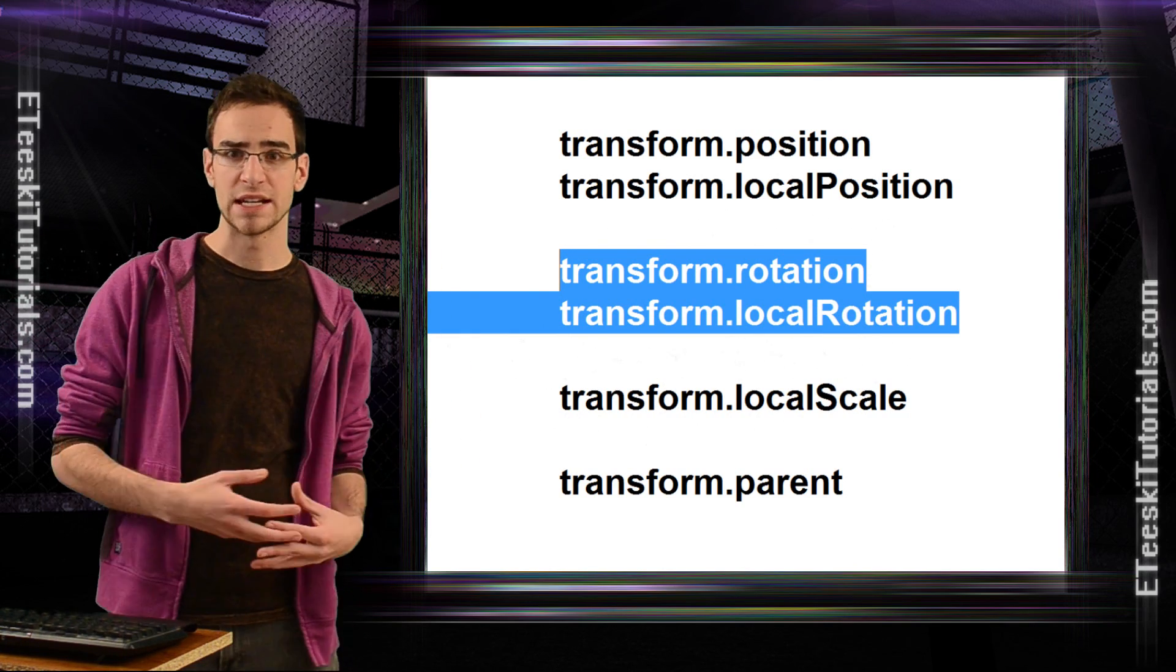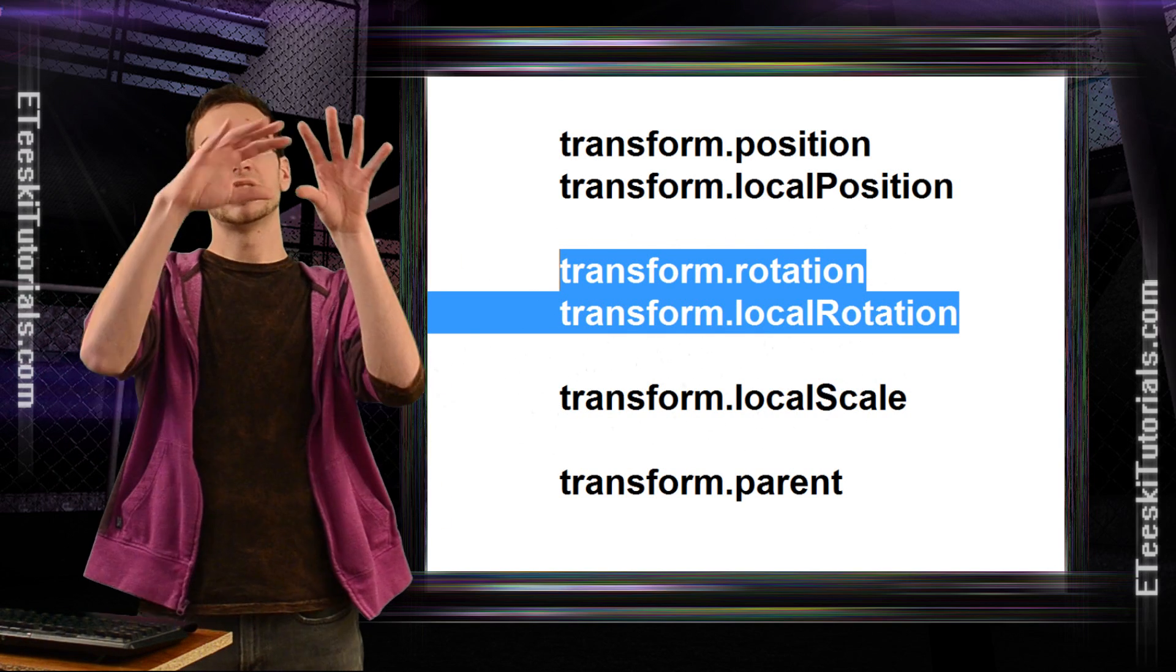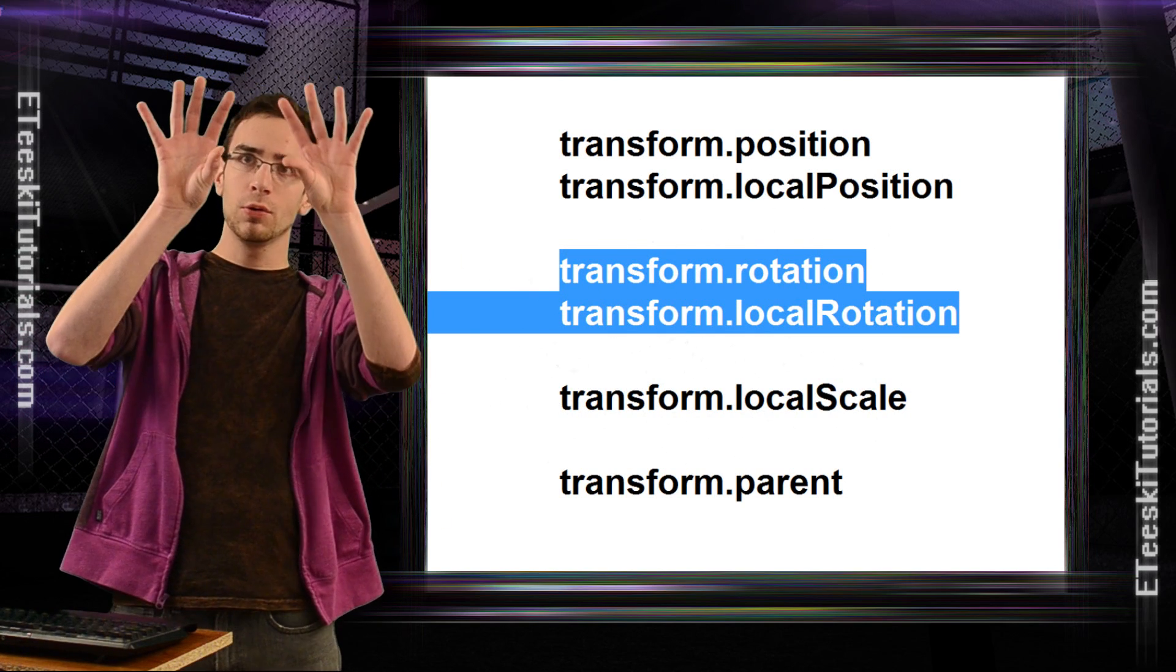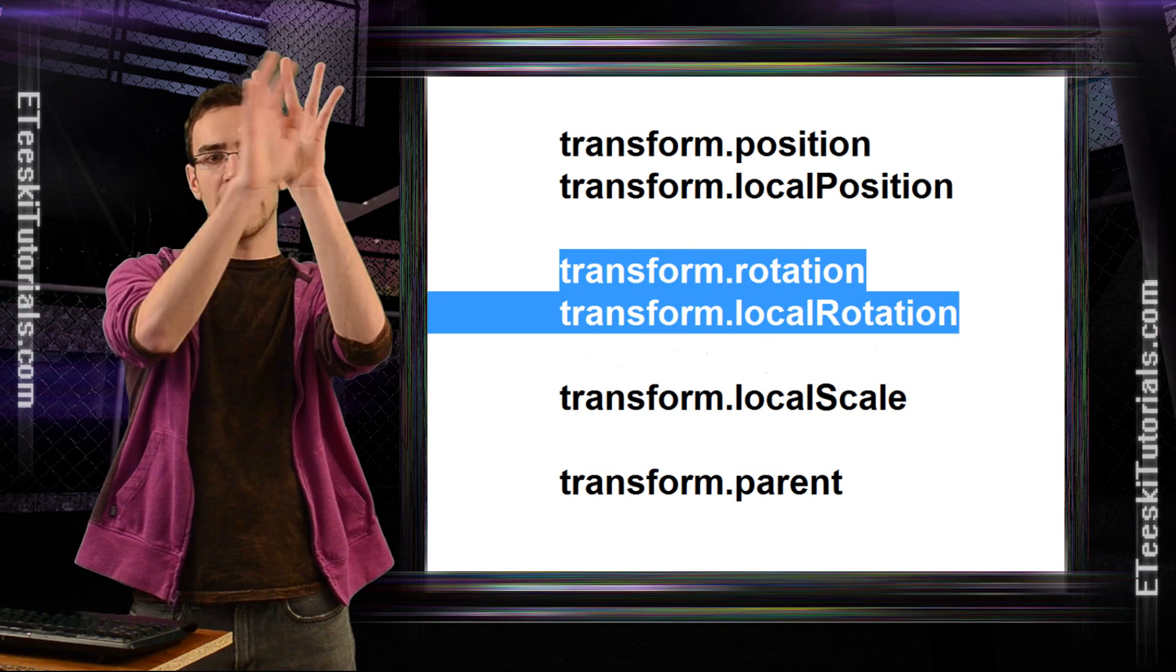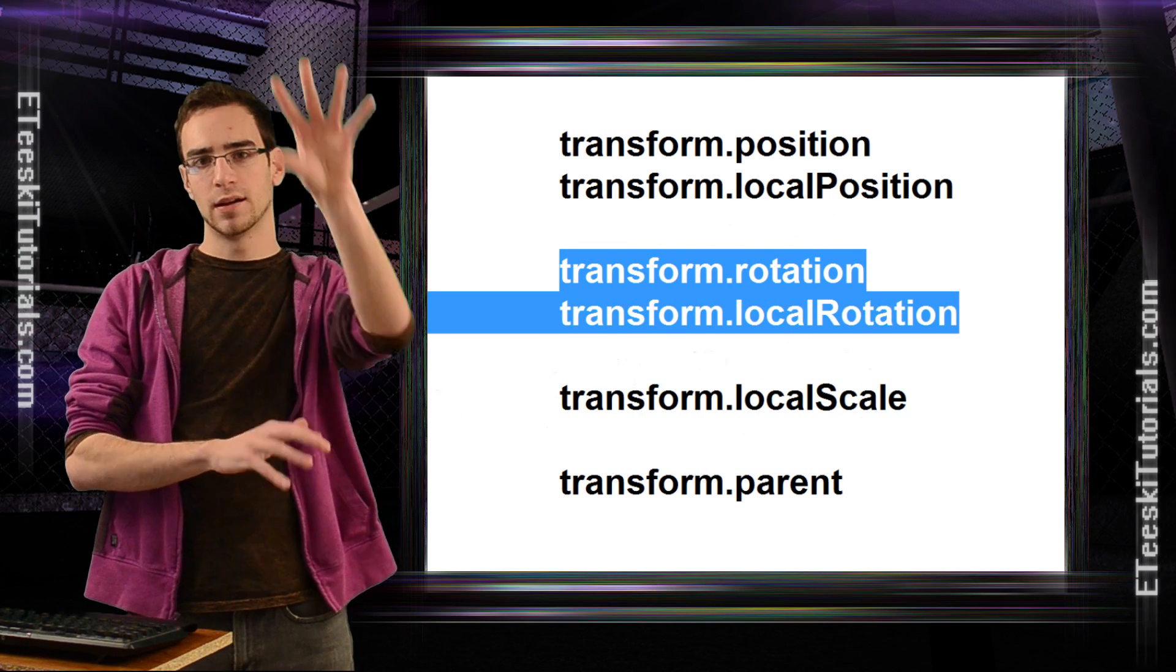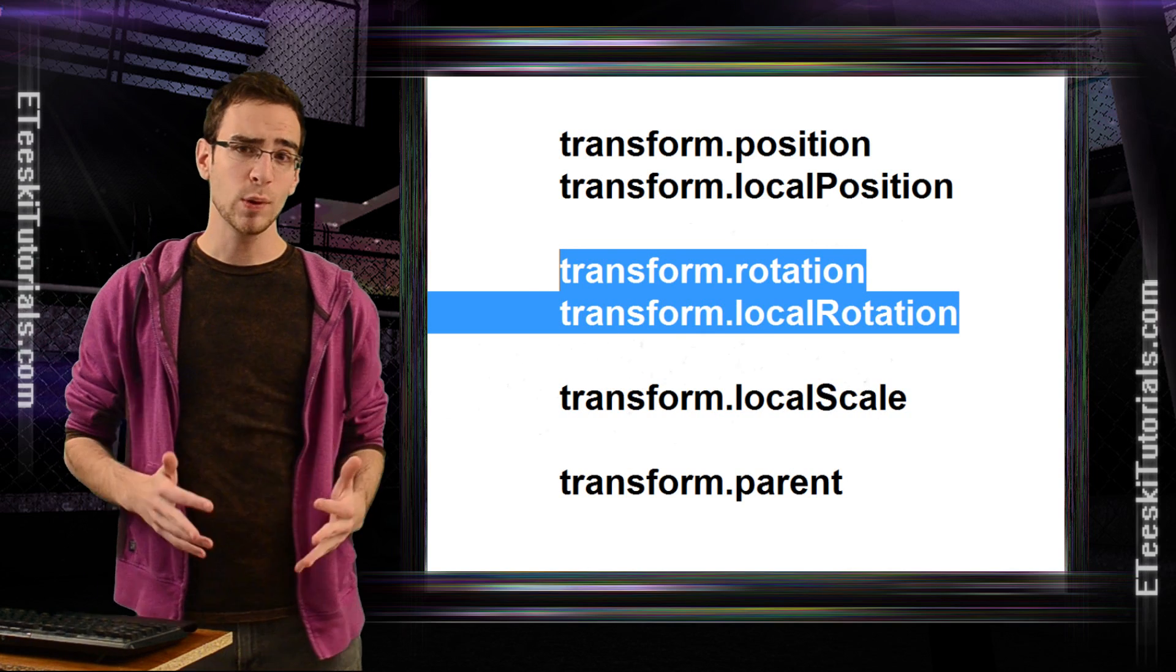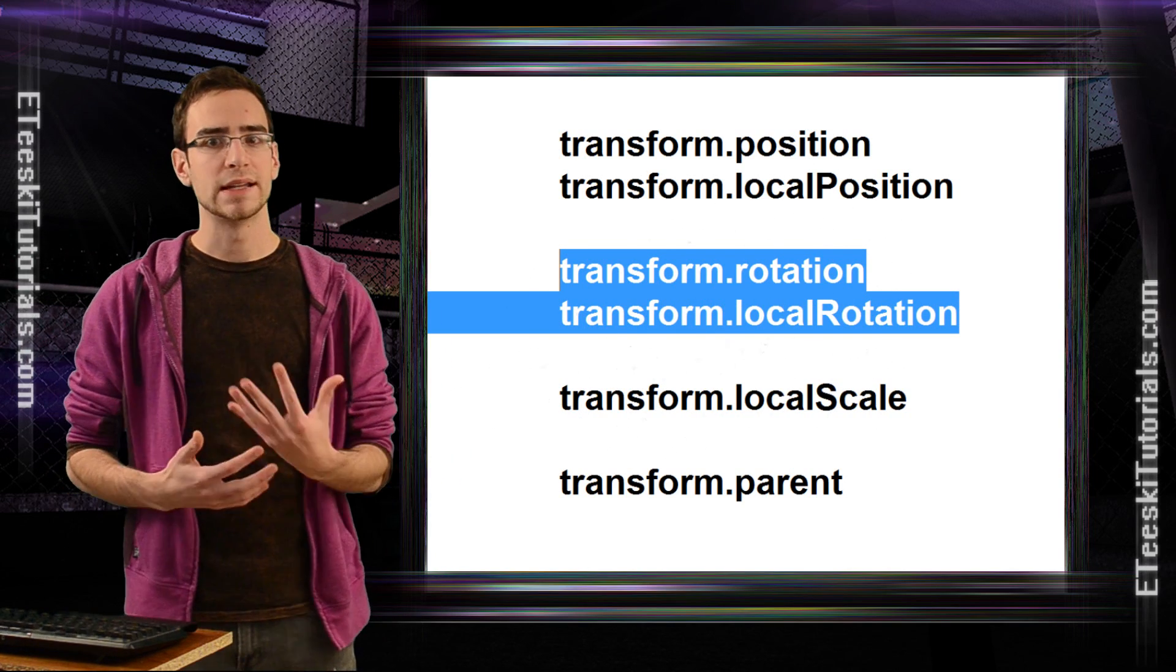And then transform.localRotation is going to give you back the rotation of that game object according to the grid or according to the axes of that parent's game object. Another way that you can kind of imagine this is a grid.